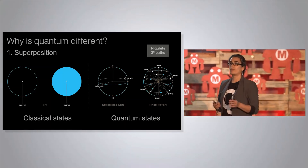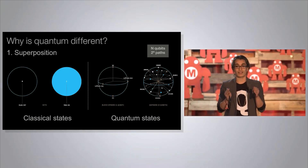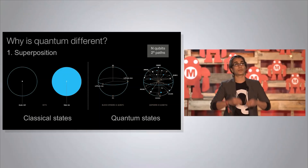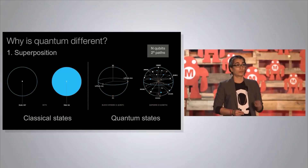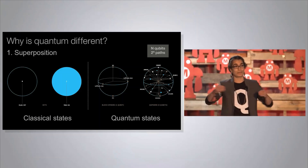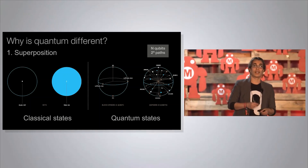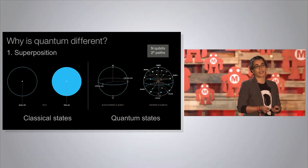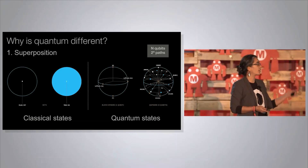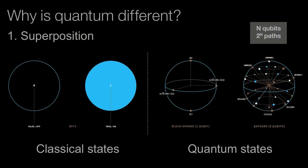If one qubit can be in a superposition of two states, then two qubits can be in a superposition of four states, and three qubits can be in a superposition of eight states. So the possibility space you can explore is much more interesting and complex in quantum information. The diagram on the right is showing you a superposition of five qubits — you can be in a superposition of 32 states. Superposition is the first thing.